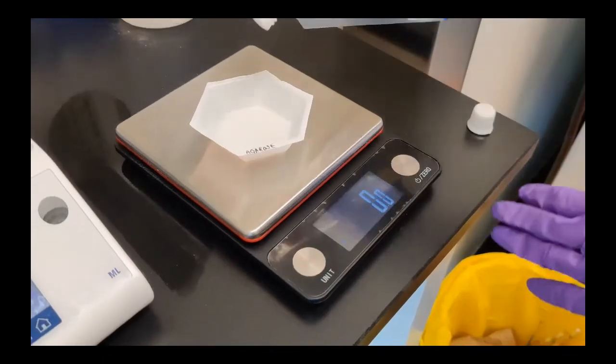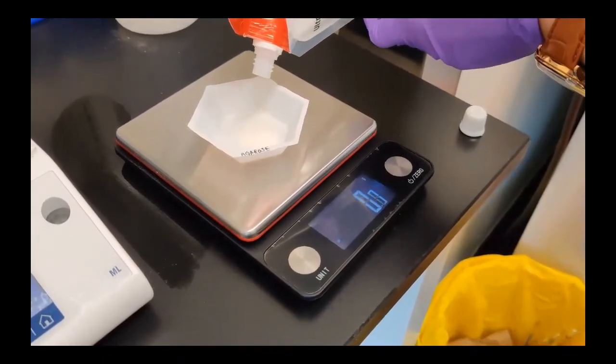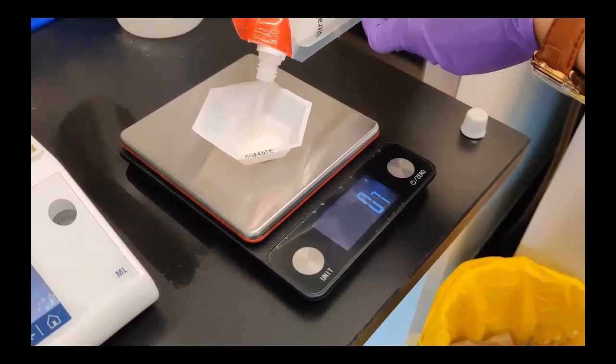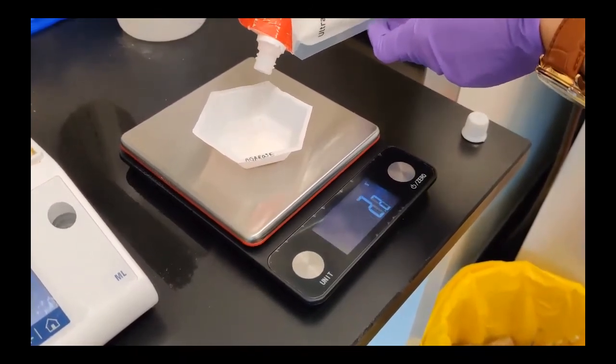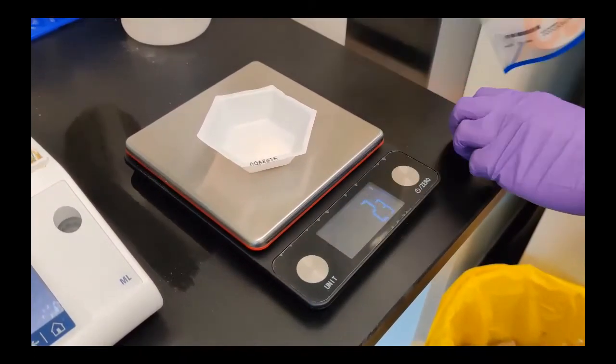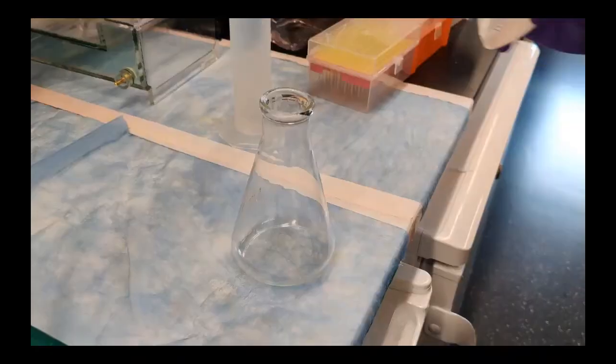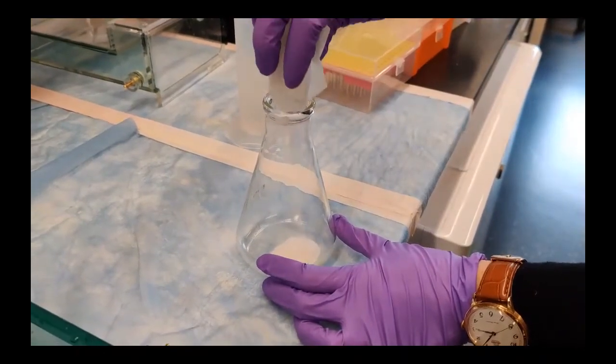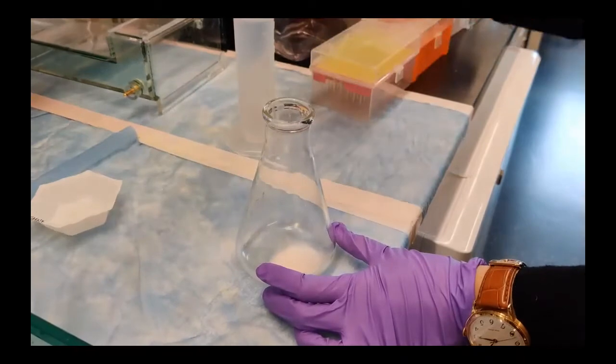To do this, first we must make the gel. This is sort of like making jello at home. We have to weigh out some of the agarose powder, which makes up the gel. We then put the powder in a flask and we add some liquid for it to dissolve in.